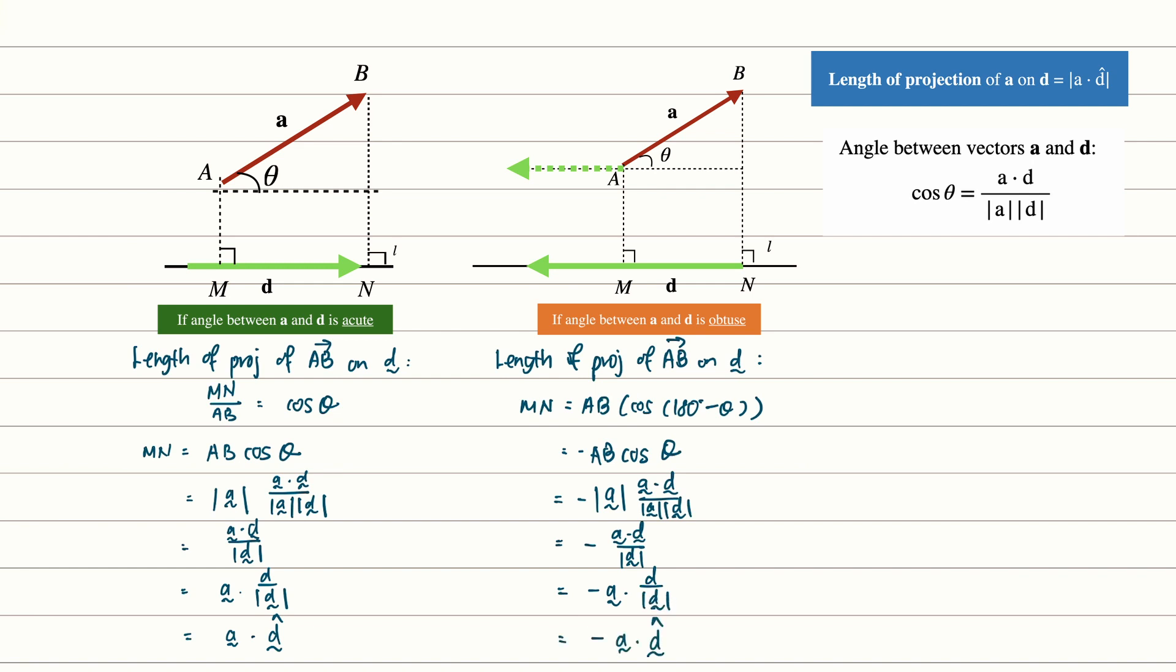Now combining these two cases together, we can then state that the length of projection of a onto d is simply modulus a dot unit vector of d. And that's why you see a modulus sign over here.